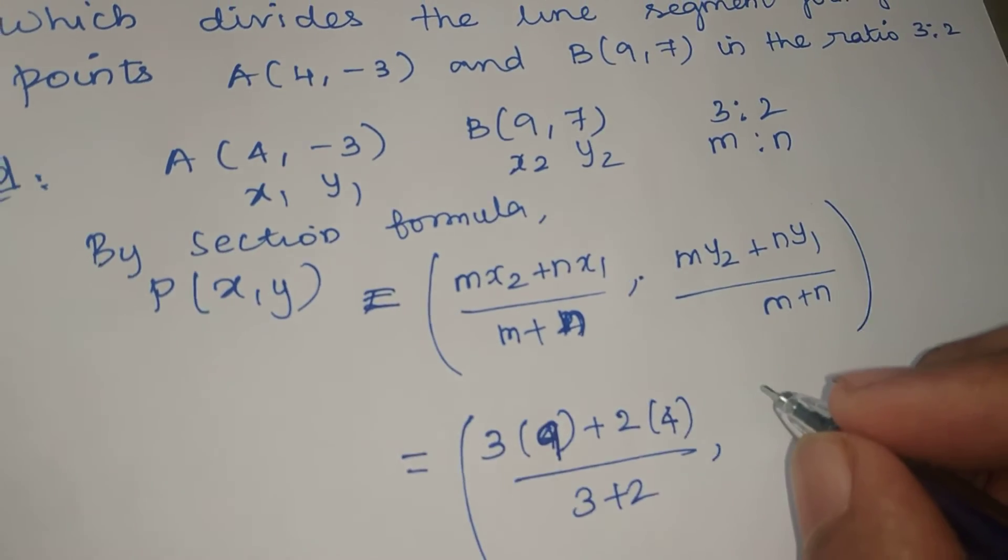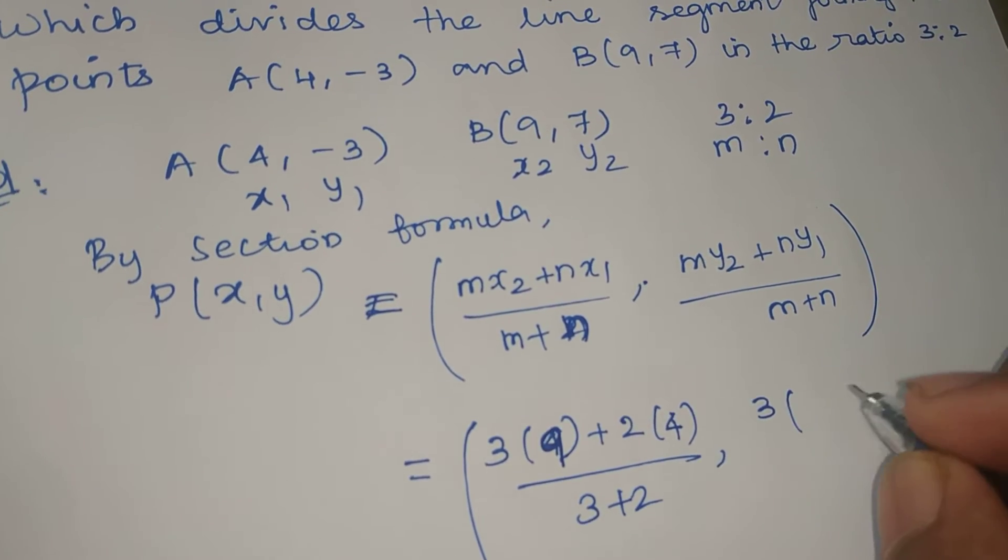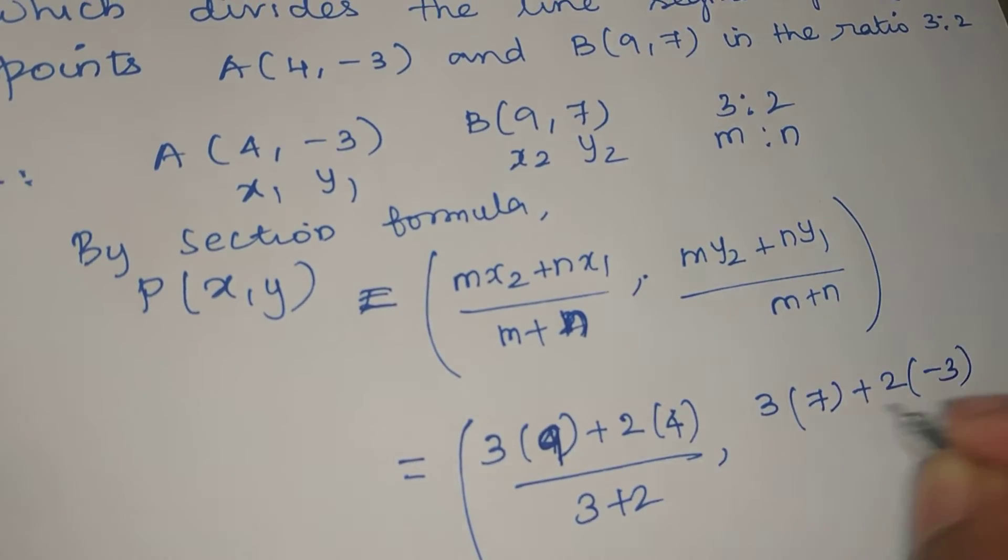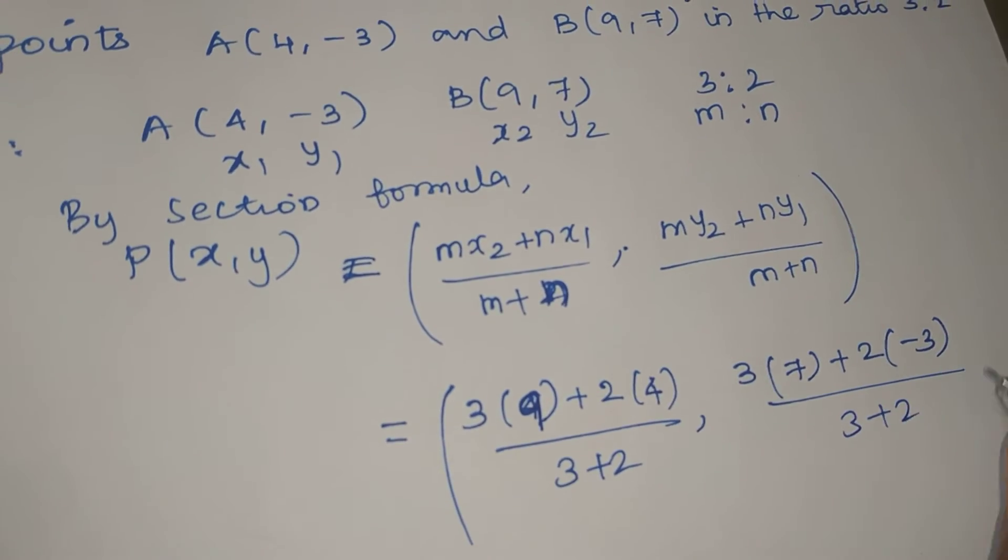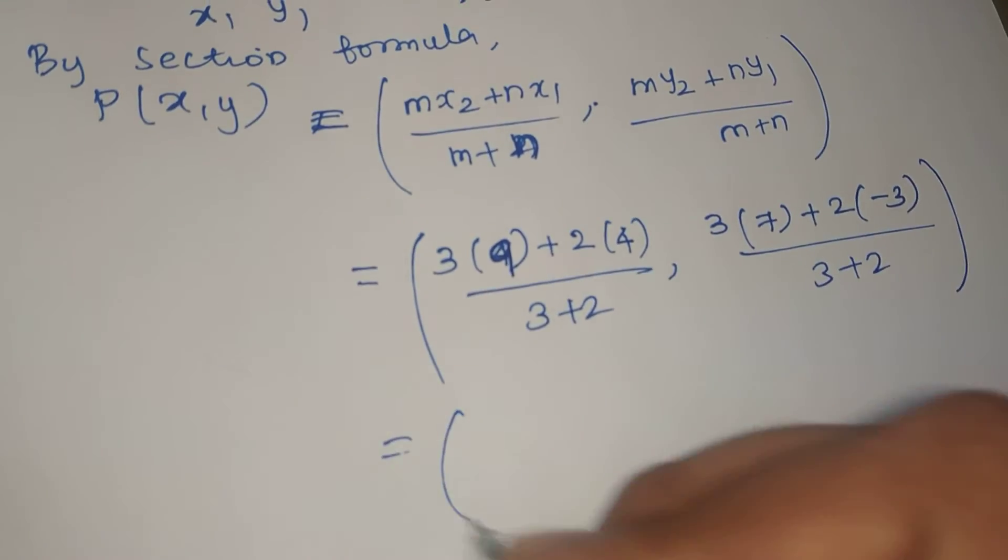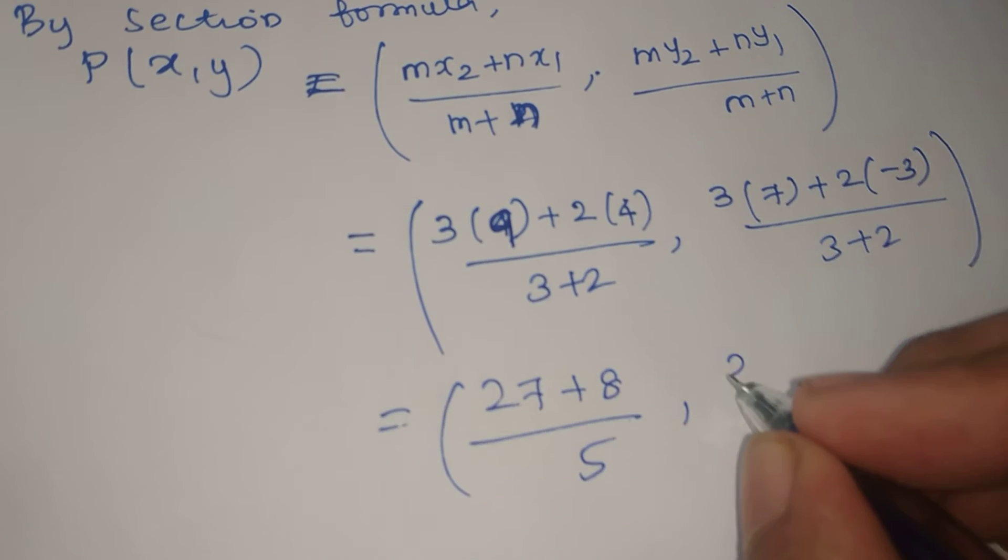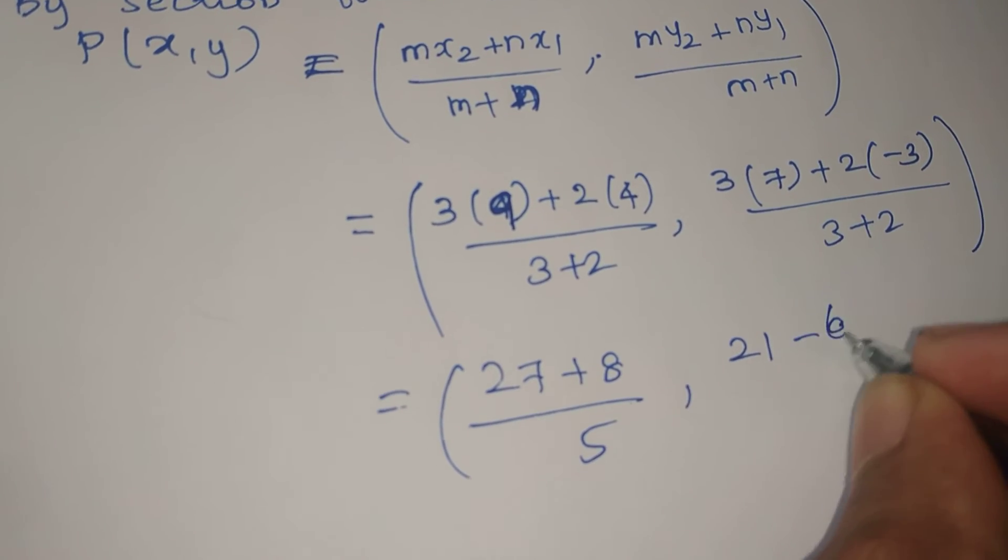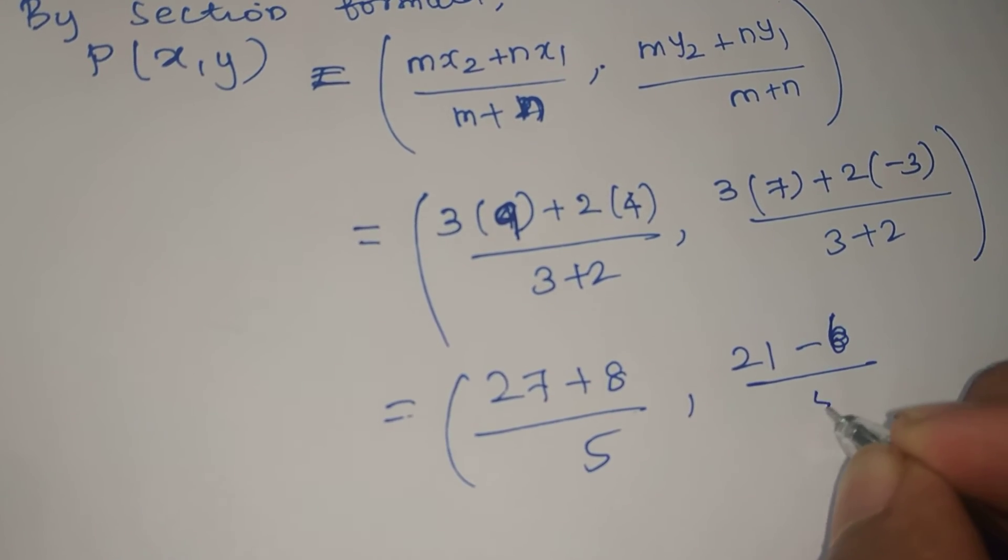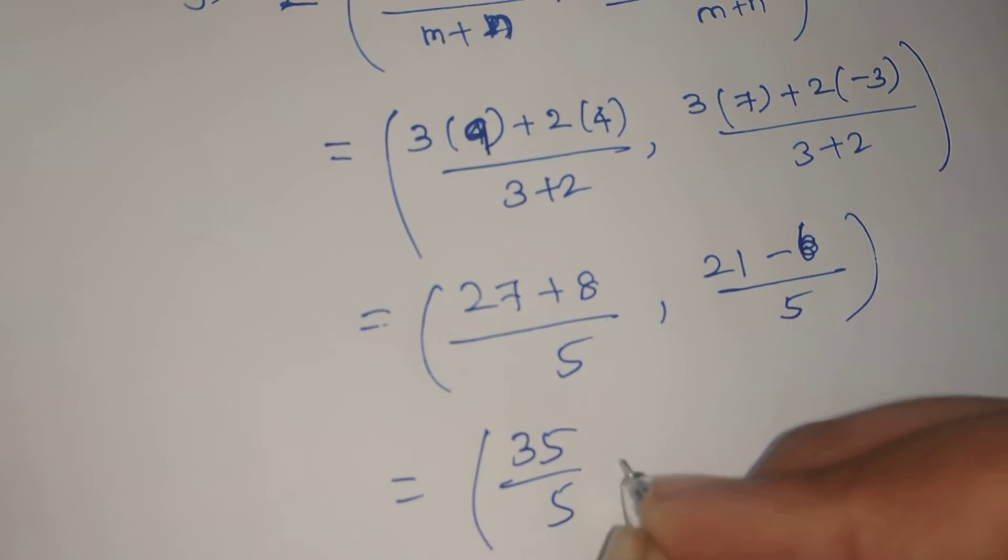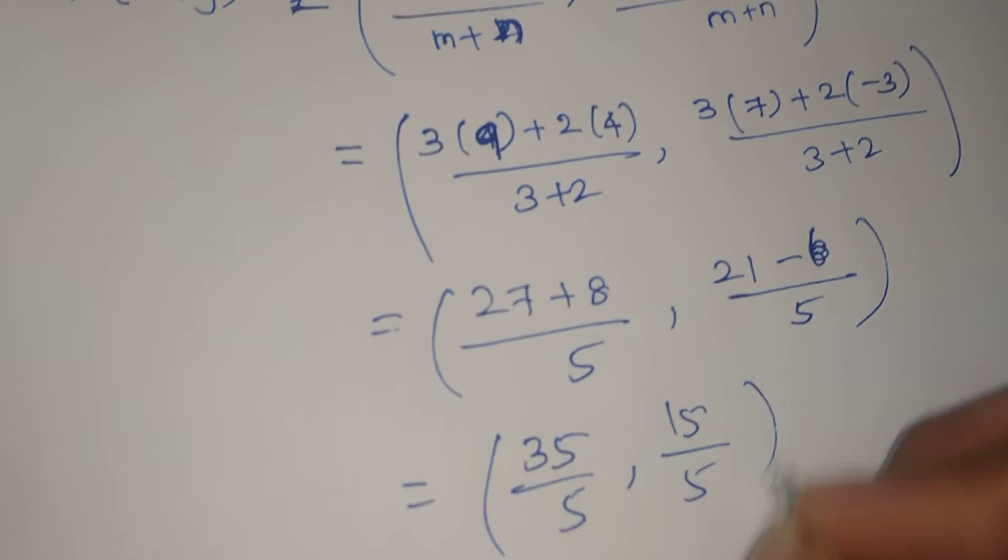For y-coordinate, 3 times 7 plus 2 times minus 3 divided by 3 plus 2. So, 3 nines are 27 plus 2 fours are 8 divided by 5, which gives 35 by 5. And 21 minus 6 equals 15, so 15 by 5.